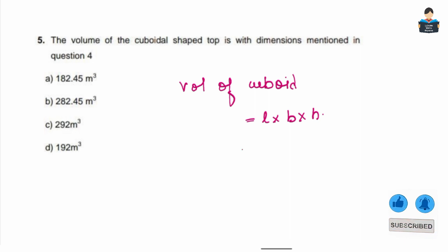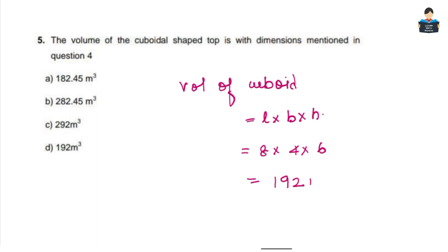For the volume of the cuboid, dimensions are 8 × 4 × 6. Multiply: 192 cubic meters. That is Option D. This video is now complete. For the next case study, watch the next video. Please like, share, subscribe. Thank you.